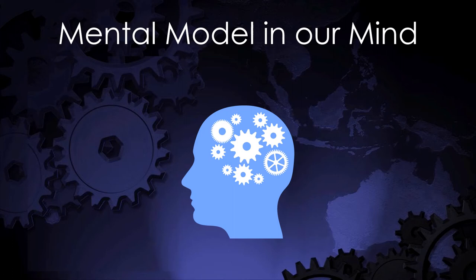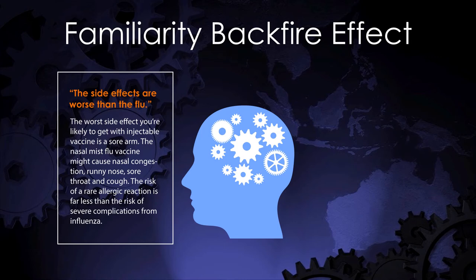We form mental models in our brain about the world around us. The different bits and pieces fit together and interact with each other, much like the gear wheels shown here. These mental models can work against us when we, for example, hear information like "the side effects are worse than the flu," followed by an explanation why that isn't really the case and that a sore arm will most likely be the worst side effect. Especially when we are not paying close enough attention, the familiarity backfire effect can kick in.